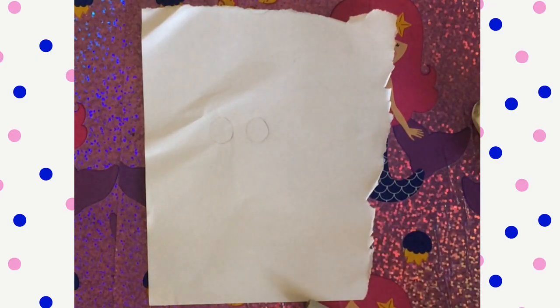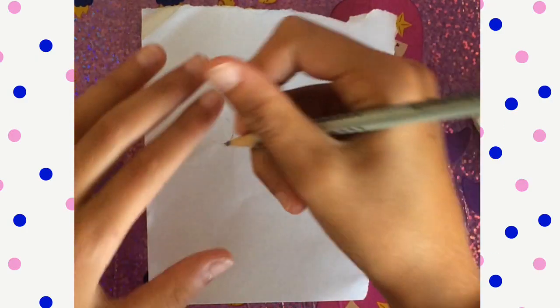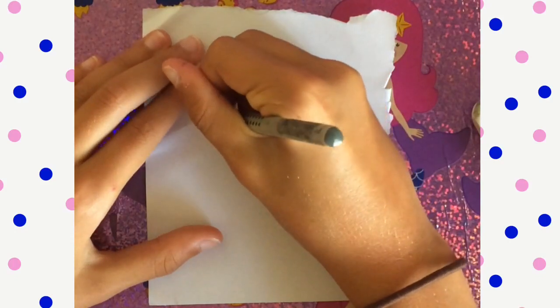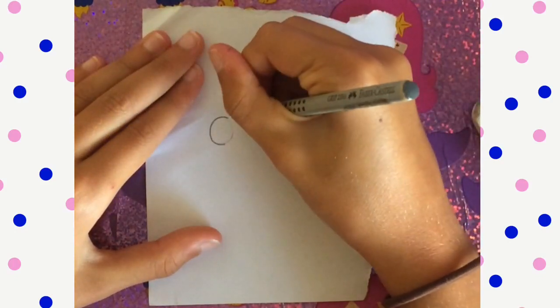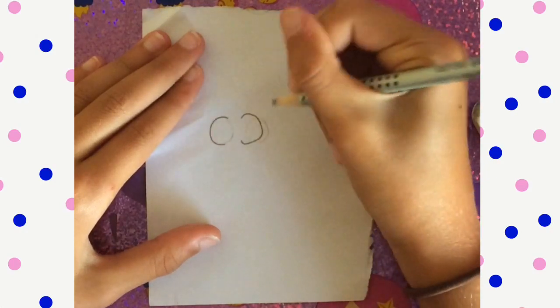The first step to drawing the Minion is doing half a circle, two halves of a circle like that.